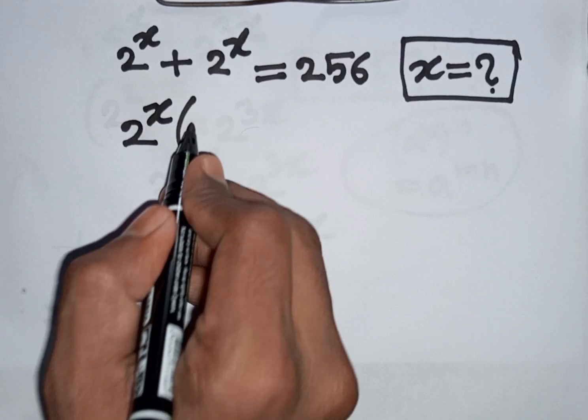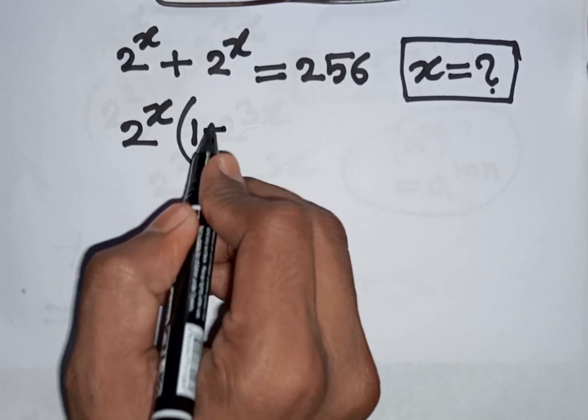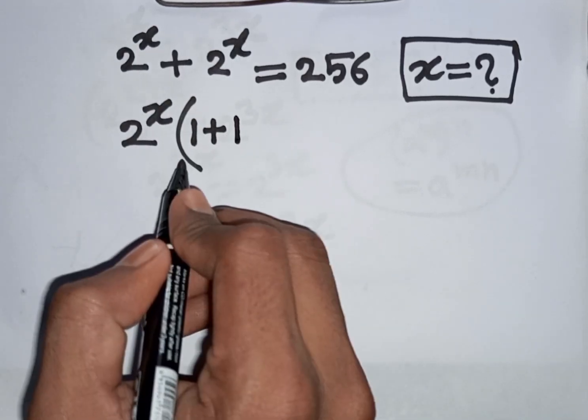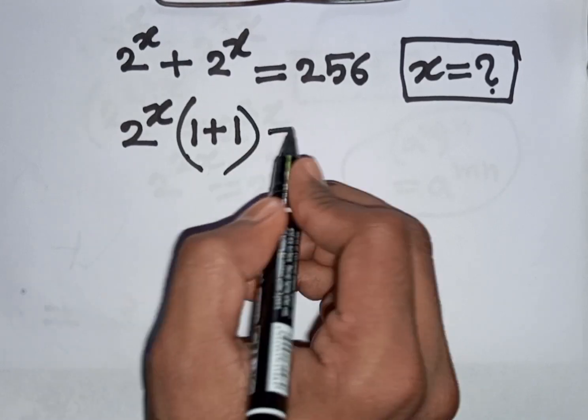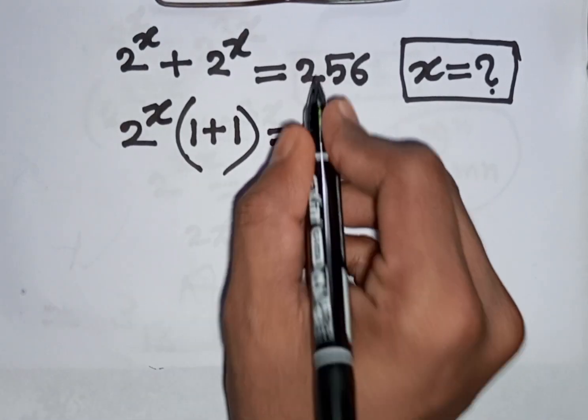This divided by this, that means one, plus this divided by this, that means one. Then bracket close is equal to 256.